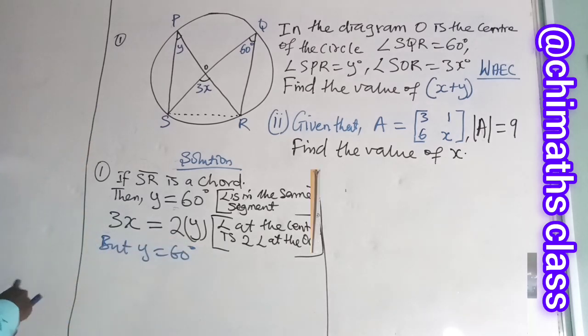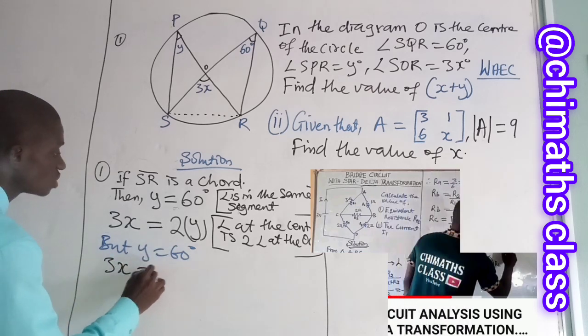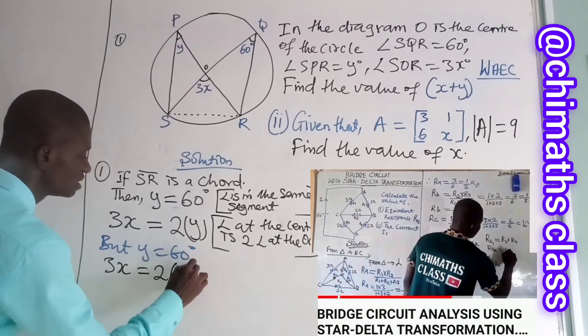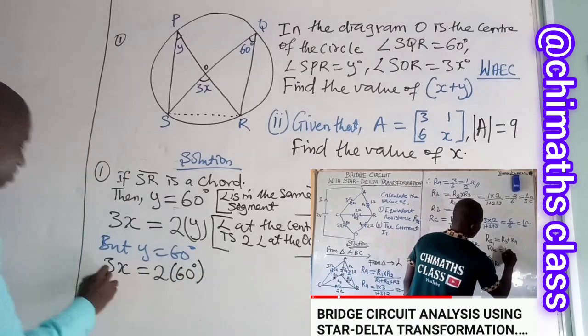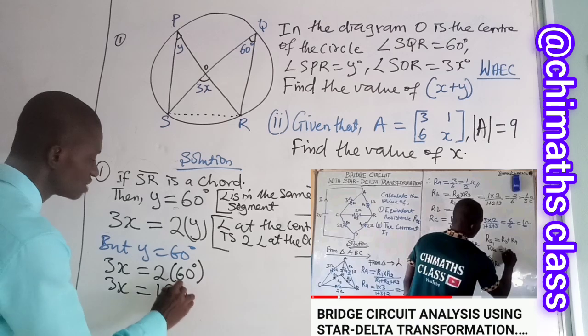So I can have X. Y is 60 degrees. I can have 3X is equal to 2 by 60 degrees. So that 3X is equal to 2 times 60, you have 120 degrees.